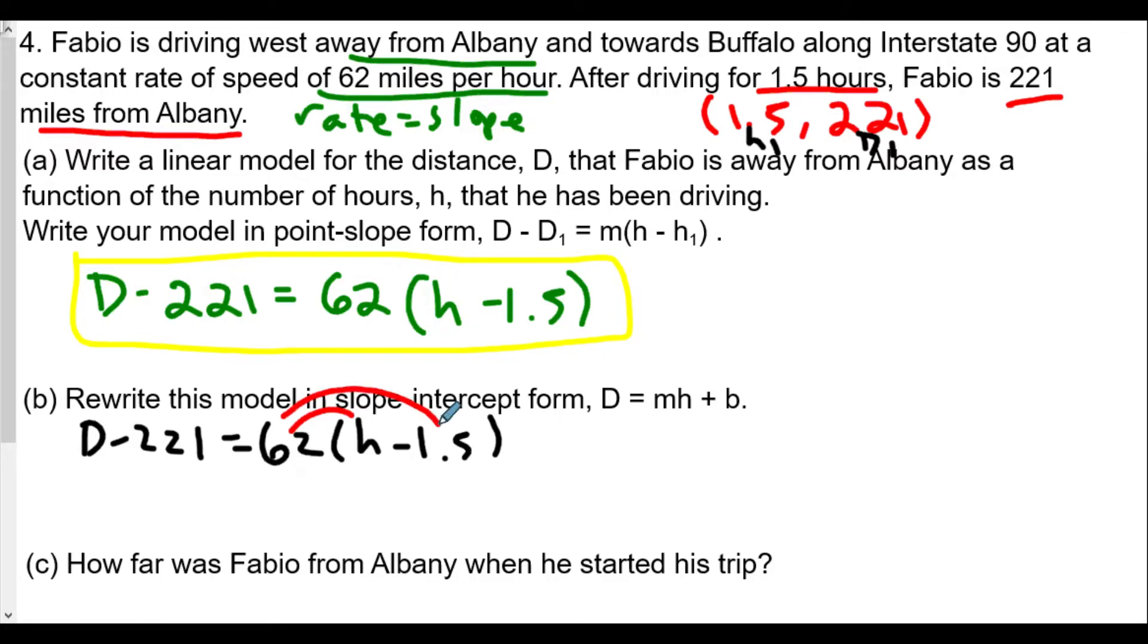We're going to get D - 221 = 62h minus, now 62 times 1.5 I believe is going to be 93.